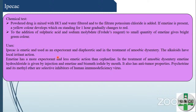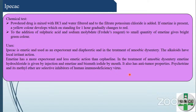Ipecac is used as an emetic and expectorant. Alkaloids have local irritant action and it is used in treatment of amoebic dysentery — emetine hydrochloride is given by injection and emetine and bismuth iodide by mouth. It has more expectorant and less emetic action than cephaline. It also has antitumor properties. Tychotrile and its methyl ether are selective inhibitors of HIV.